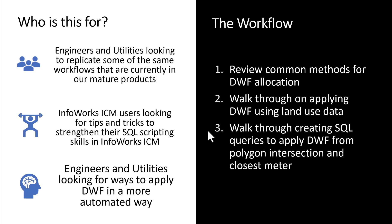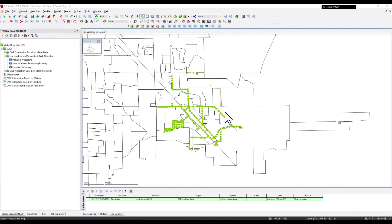First, we'll review some common methods for dry weather flow allocation. These include using land use data — base flows from residential or commercial areas — using SQL queries to apply dry weather flow from polygon intersection within sewer sheds, and a closest meter approach where water meter data is factored for things like irrigation and summed into a single area.